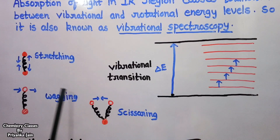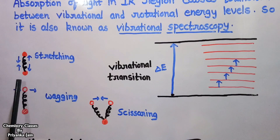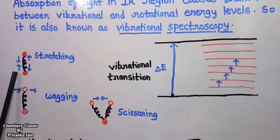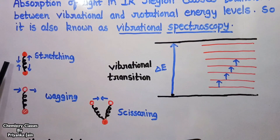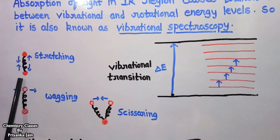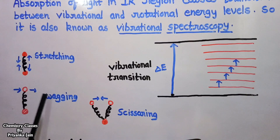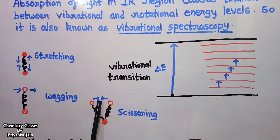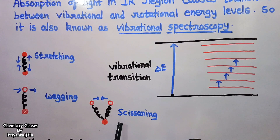What are vibrations? In a molecule, there are bonds between atoms, but these bonds are not rigid — they behave like springs and can move. Atoms can move toward each other or far apart; this is called stretching. They can also vibrate sideways, which is called wagging, or move toward and away from each other in a scissors-like motion, called scissoring. Several other types of movement like bending and rocking can also happen. These are all types of molecular vibrations.